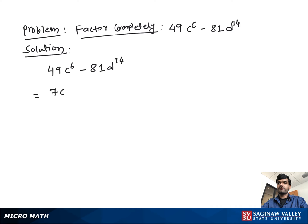Minus 81D to the 14th as 9D to the 7th all to the square. Now if we see, it looks like A squared minus B squared form, so A squared minus B squared equals A minus B times A plus B.